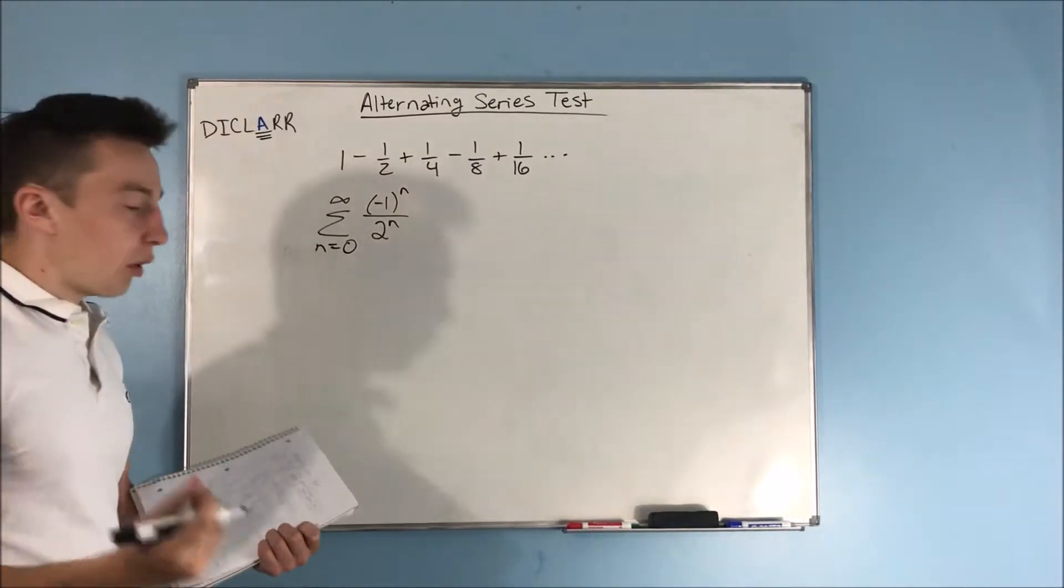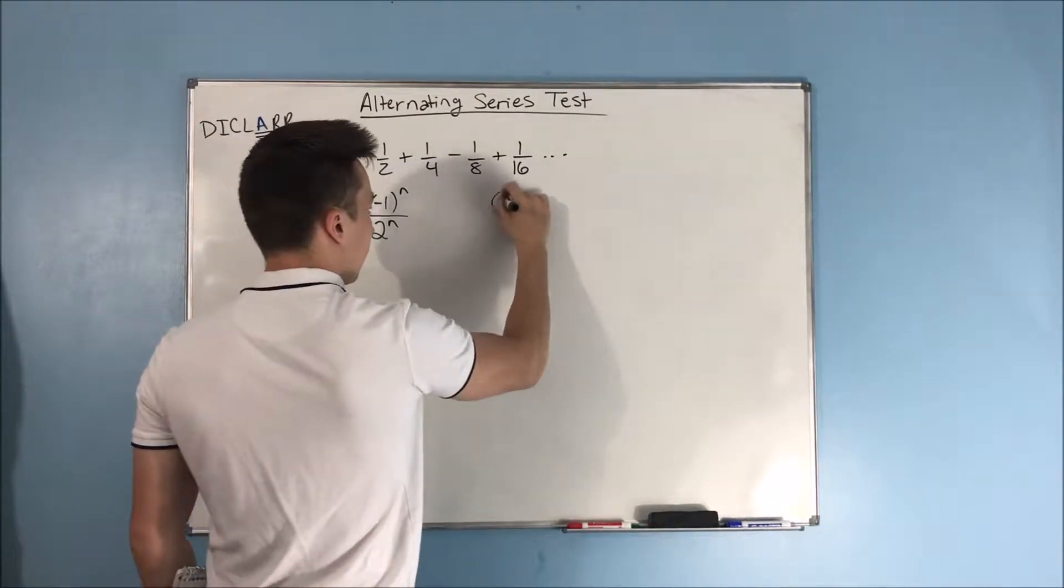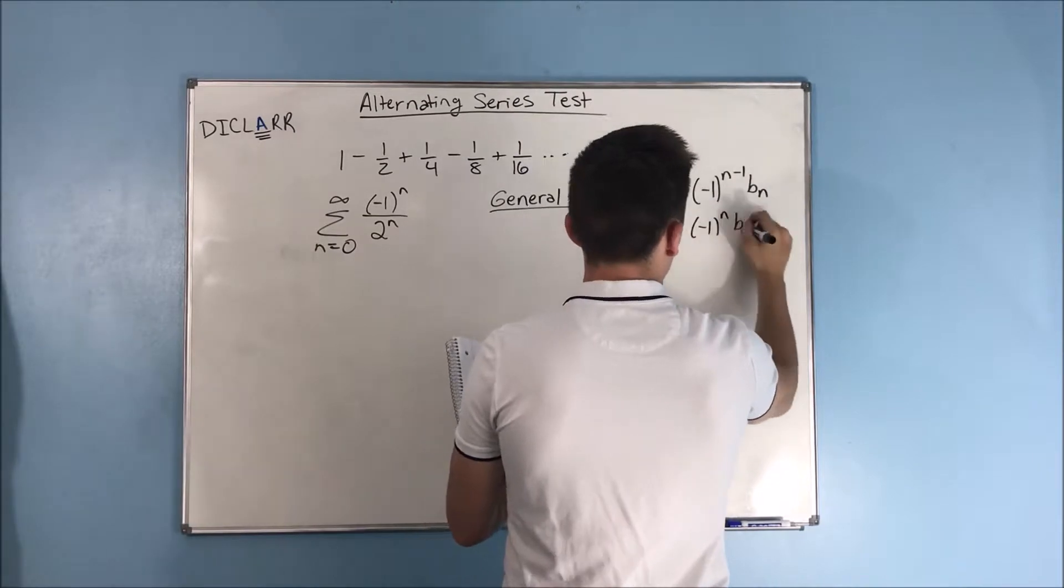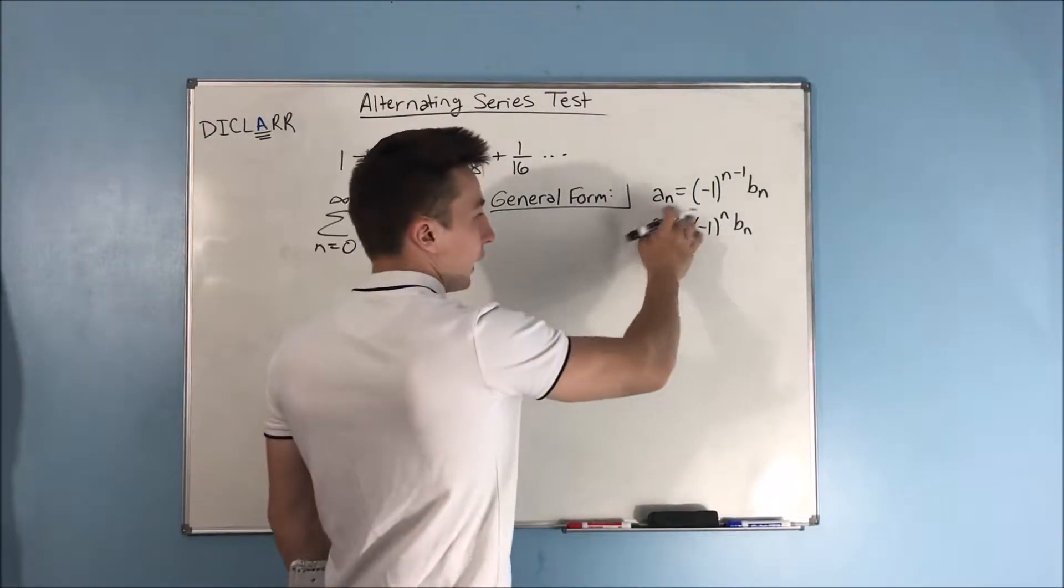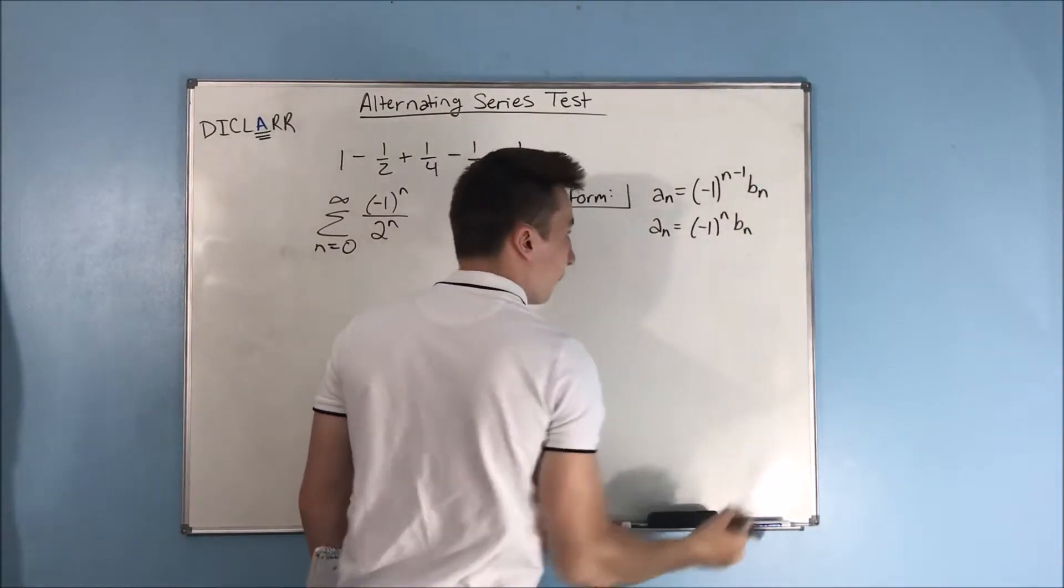So, the general alternating series form, this is the general form. So, you basically end up with a sub n equals negative 1 to the n minus 1 times b sub n. And that b sub n is very important.